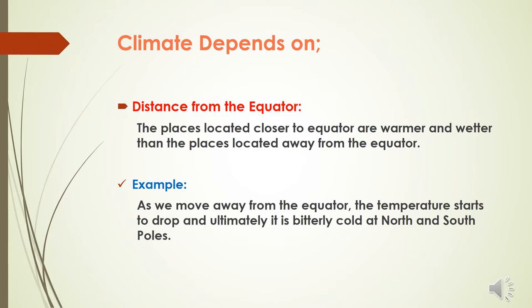Distance from the equator is one of the deciding factors in determining the temperature and climate of a place. Places located closer to the equator are warmer and wetter than the places located away from the equator. For example, as we move away from the equator, the temperature starts to drop, and ultimately it is bitterly cold at the north and south poles.